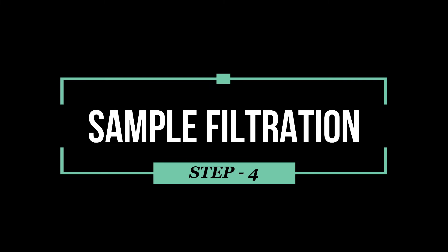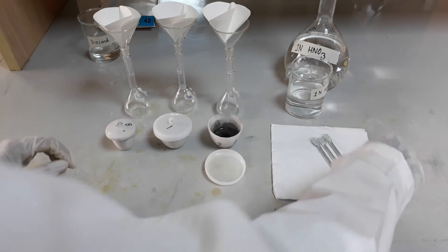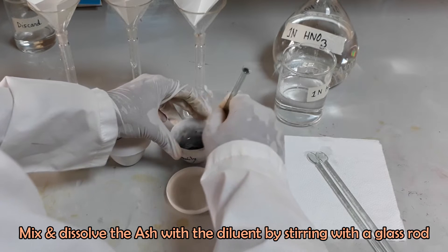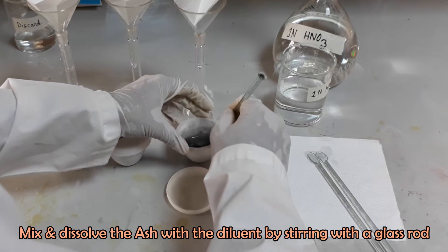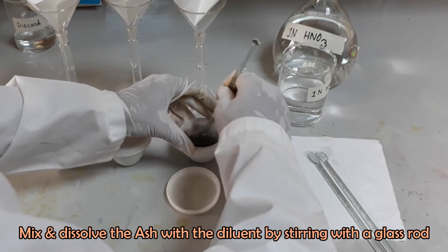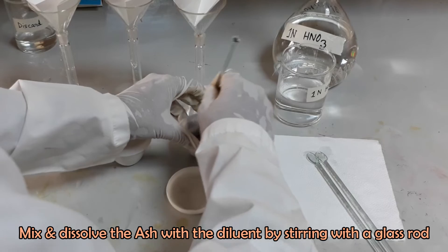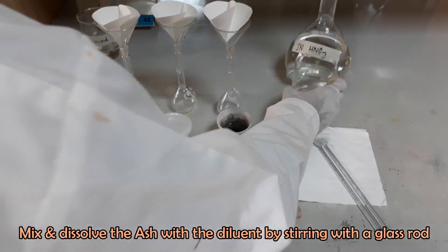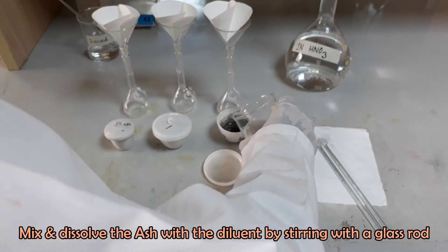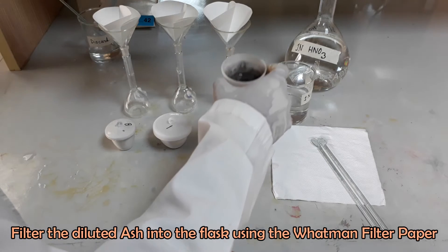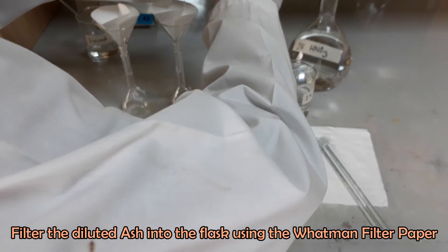Now we will filter our samples and blank. Mix and dissolve the ash with the diluent by stirring with a glass rod. Filter the diluted ash into the flask using the Whatman filter paper.